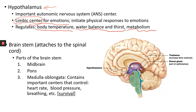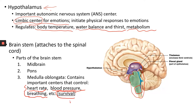The brainstem attaches to the spinal cord. The most important part of the brainstem is the medulla oblongata — the last part of the brainstem before you reach the spinal cord. The medulla oblongata contains important neurons that control your heart rate, blood pressure, breathing, swallowing, and vomiting response. Except for the vomiting part, these functions are related to your survival. If the brainstem is damaged, your life can be in danger.